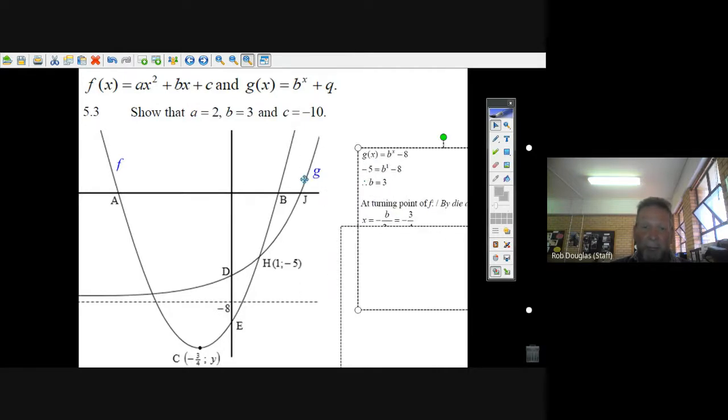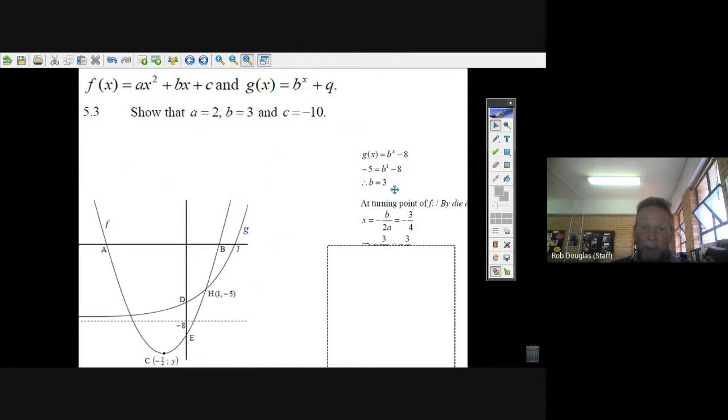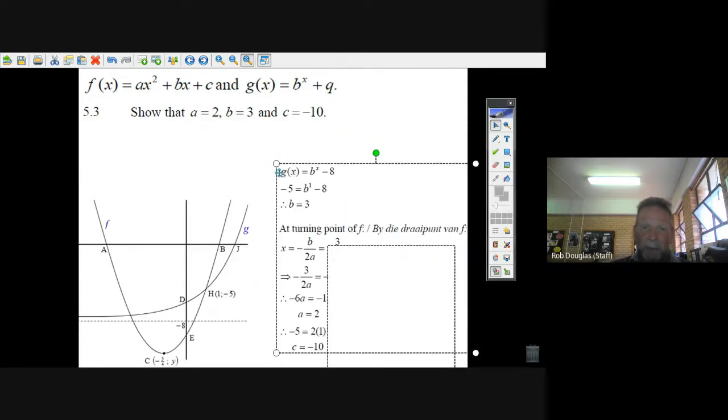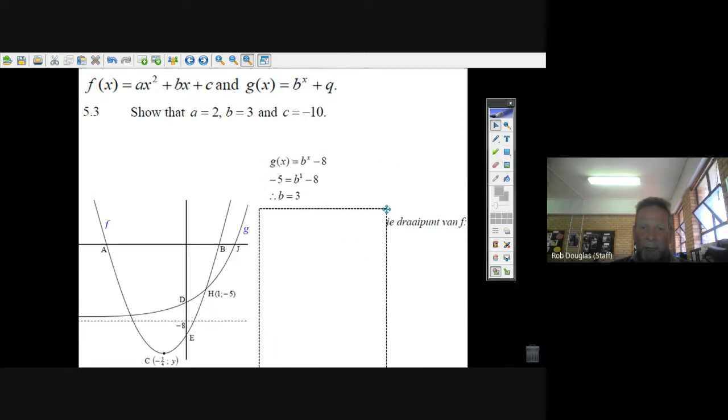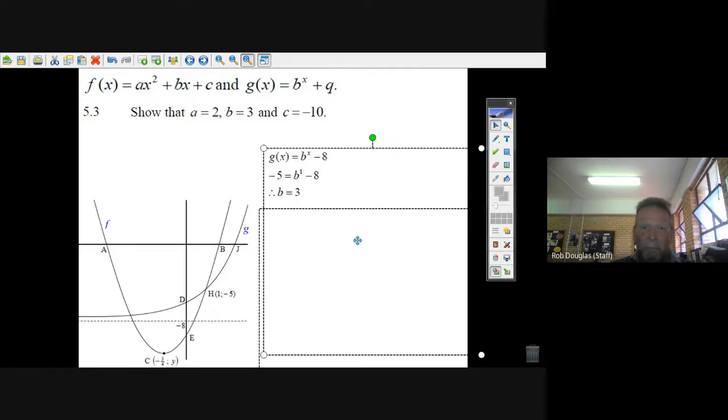Let's just make this big. We're working with the exponential equation. Let's make this solution a little bigger here so we can see it. Okay, so what we're going to do is, we're given one of these points is (1, -5). So when x is 1, y is minus 5. We place those two points in there, and we'll be able to solve for b. We add 8 to both sides. We get b equals 3. And all we did is we substituted in this point (1, -5) into this equation. So now we've got b equals 3.